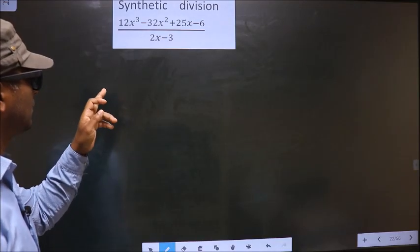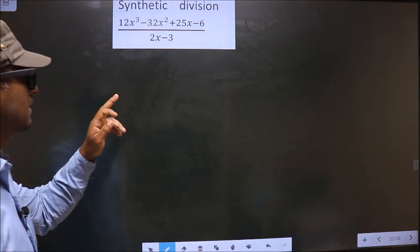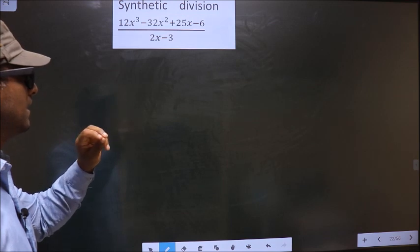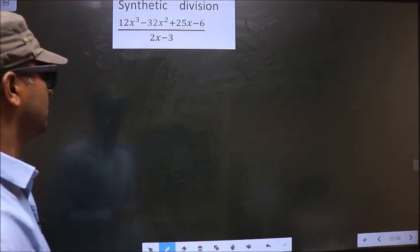Synthetic division. 12x cube minus 32x square plus 25x minus 6 by 2x minus 3.